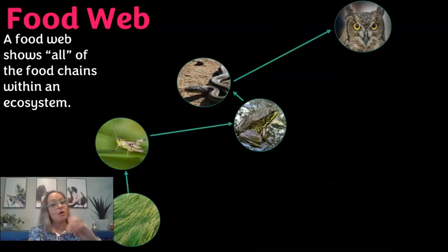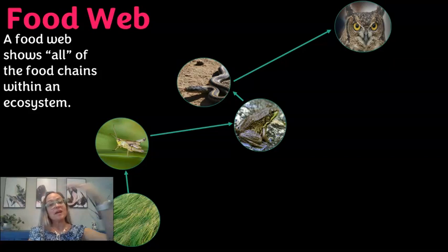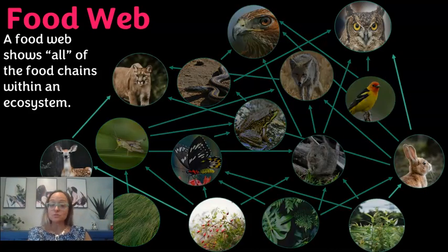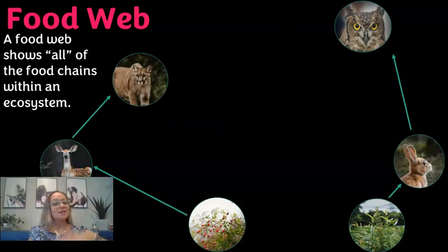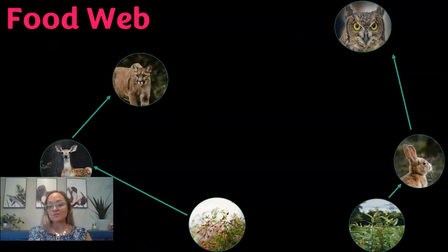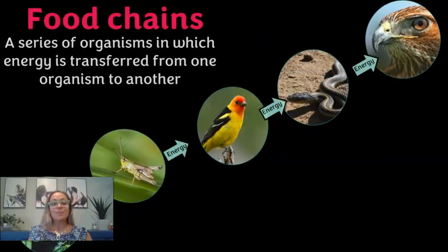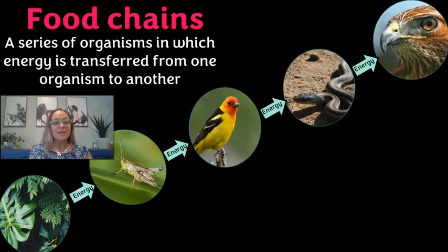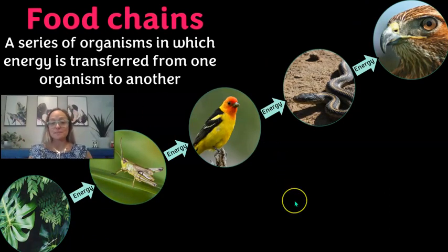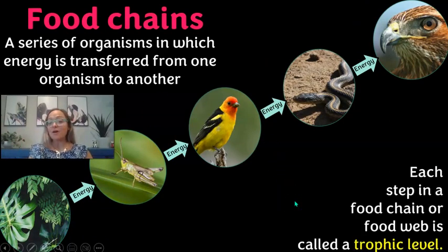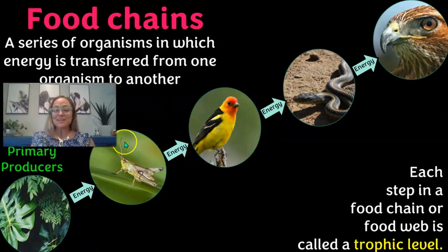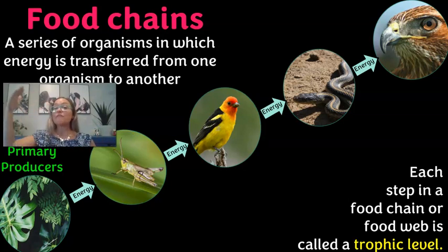Food chains always start with an autotroph and then pass to an herbivore and then to various predators or consumers. Food webs are just a bunch of food chains all intertwined together. We can add labels to the organisms: autotrophs are called primary producers, and the first trophic level is the primary producers. A trophic level is each step in a food chain or food web.